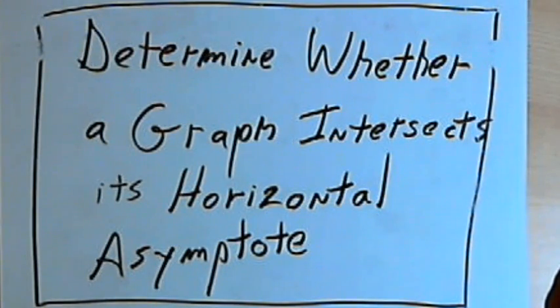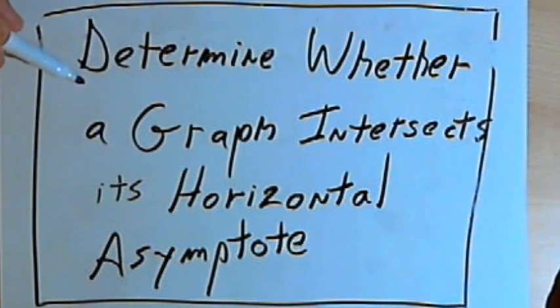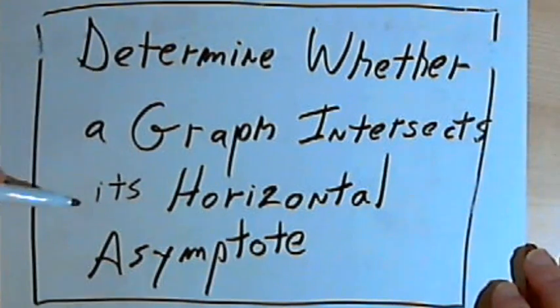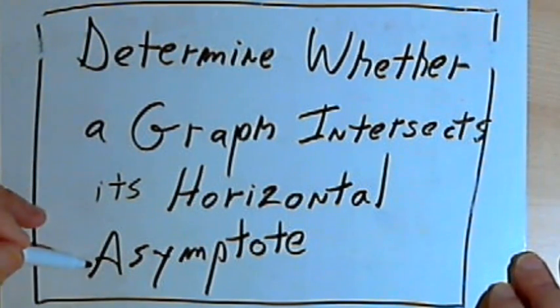This video is provided as supplementary material for courses taught at Howard Community College. In this video I want to show how to determine whether a graph of a rational function will intersect its horizontal asymptote.